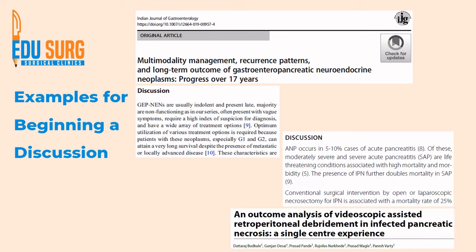On the other hand, if you see this example which is on infected pancreatic necrosis, you can see that we have started with pancreatic necrosis or acute necrotizing pancreatitis and from there gone into the surgical intervention and the outcome. In the first five lines only, we have reached the key area of the article — that is the outcome analysis. This is how you need to make the discussion and the beginning of it the most interesting so that readers grasp the key points.